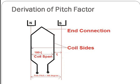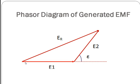Let us assume E1 is the EMF generated in one coil side and E2 is the EMF generated in the other coil side. The EMF available at the terminal of the coil will be equal to the resultant of E1 and E2. Let us draw a phasor diagram. Here E1 is the reference phasor. Since E1 and E2 are the EMFs generated in the two coil sides of the coil having a cording angle of zeta, E1 and E2 are shown to be separated by an angle of zeta.